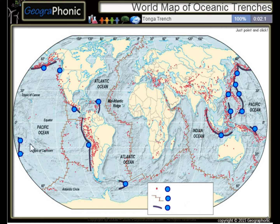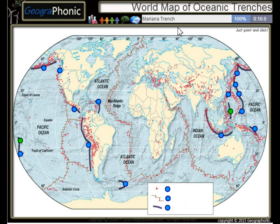The first one we see is the Tonga Trench, this is the Philippine Trench, the Mariana Trench, and the Kuril Trench.